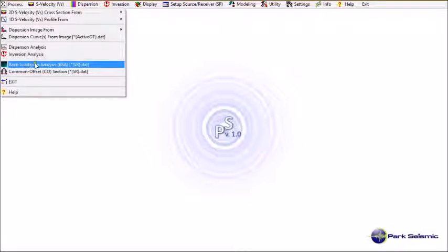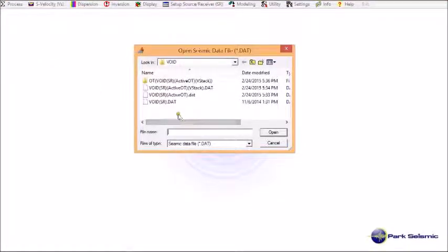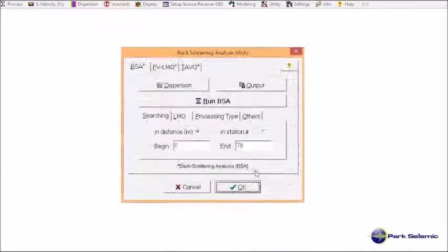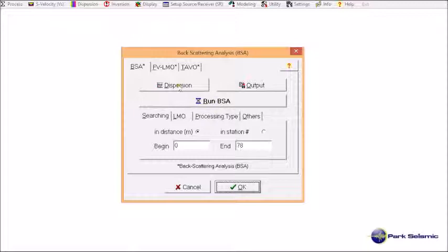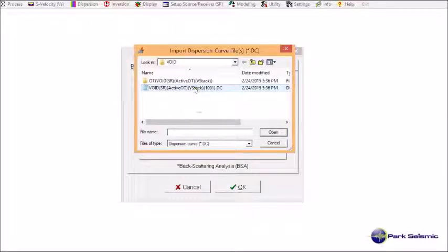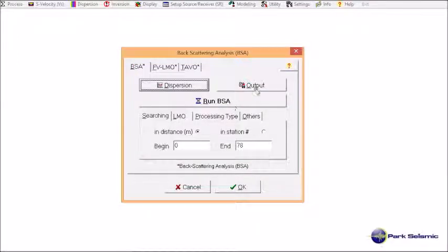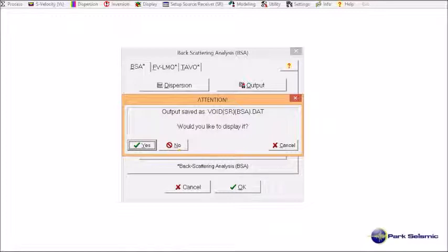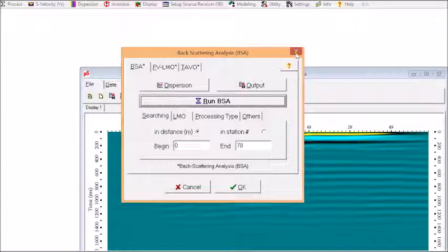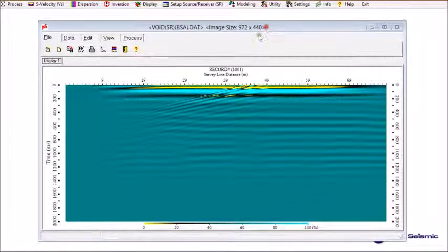Now I go for Process and Backscattering Analysis here. And then I import that void SR.DAT. And here I specify dispersion. So this is the dispersion curve which I just generated. Then I click Output. And then Run BSA. And Output is ready. And I'm going to display it.